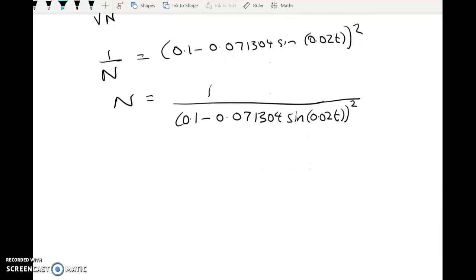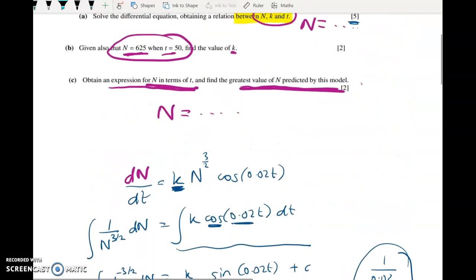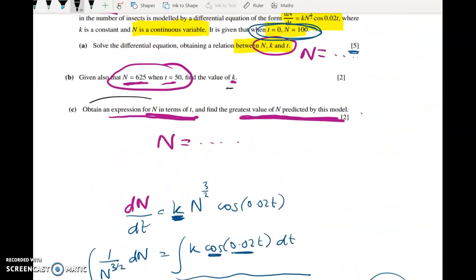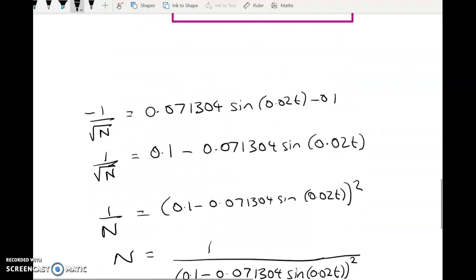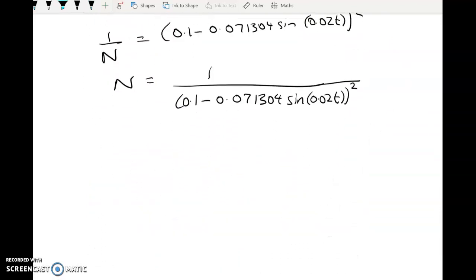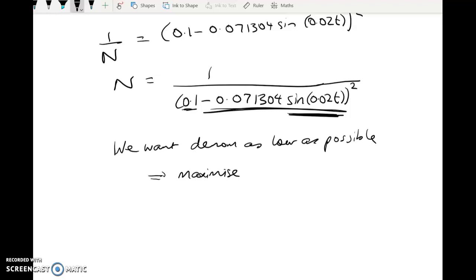All right, now what do we have to do? So that was the second part, right? Find the value of K, obtain an expression for N in terms of T, and find the greatest value of N predicted by this model. So let's look slowly at what we've got. We've got a fraction. So we want the denominator as low as possible. So we've got this take away this. So the bigger we can get this, the smaller this is going to be, and the bigger this is going to be. So we want to maximize sine of 0.02T.